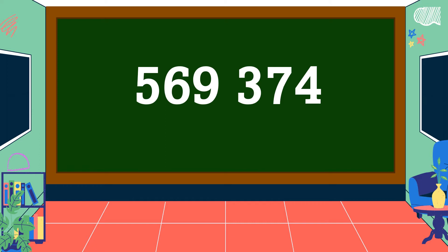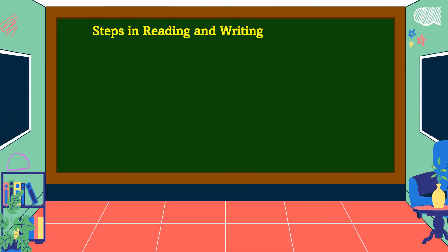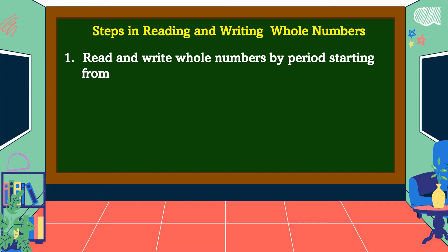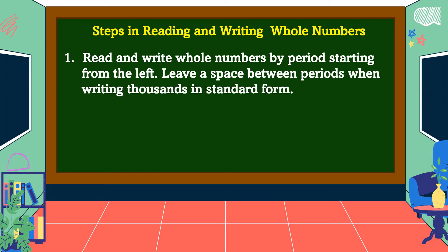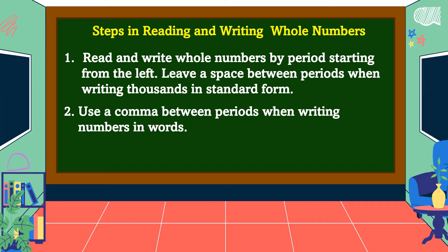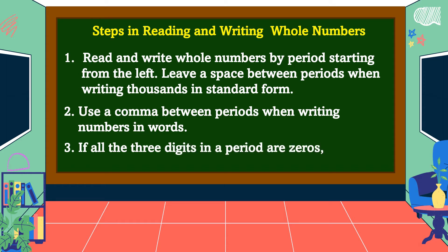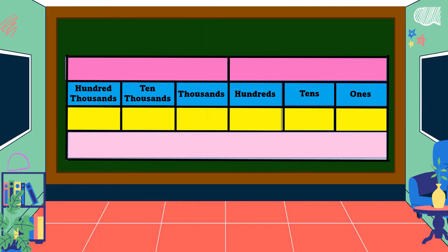Here are the steps in reading and writing whole numbers. Number one: read and write whole numbers by period, starting from the left. Leave a space between periods when writing thousands in standard form. Number two: use a comma between periods when writing numbers in words. Number three: if all three digits in a period are zeros, do not write nor read the period name.